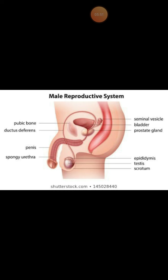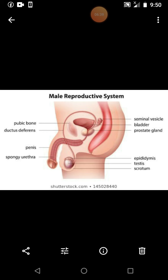The semen is a mixture of sperms and secretions from the seminal vesicle, prostate, and Cowper's gland. It is a milky whitish fluid used as a medium for the transportation of sperms. The average amount is 2 to 3 ml in a single ejaculation.